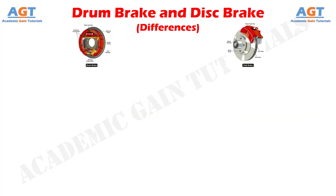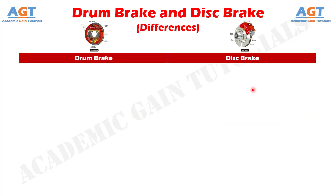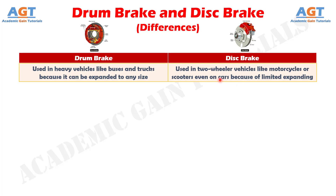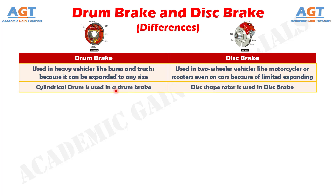Now let's look into the differences between drum brake and disc brake. Number 1: the drum brake is used in heavy vehicles like buses and trucks because it can be expanded to any size; however, you might see it on old motorcycles too. Whereas the disc brake is used in two-wheeler vehicles like motorcycles or scooters, even on cars, because of limited expanding. Number 2: a cylindrical drum is used in a drum brake, whereas a disc-shaped rotor is used in a disc brake.